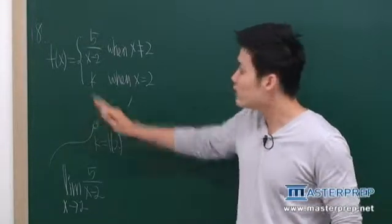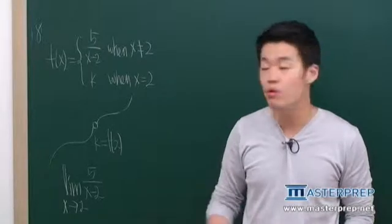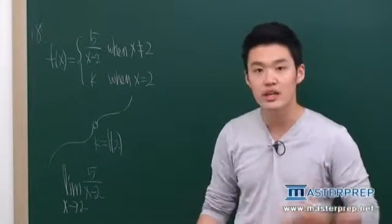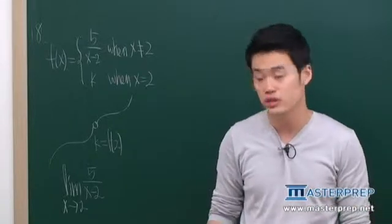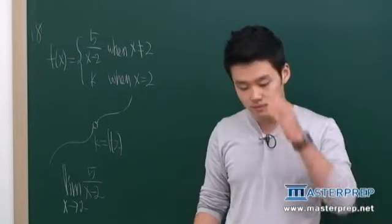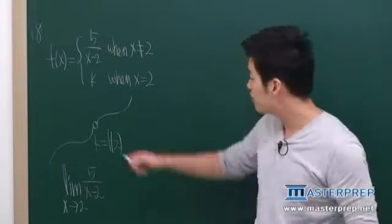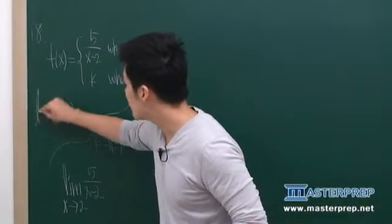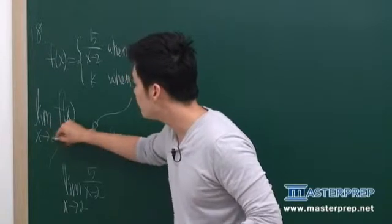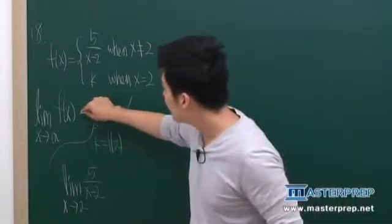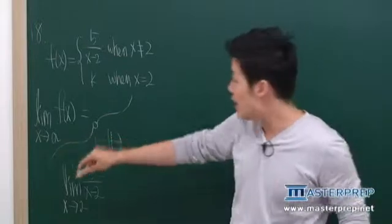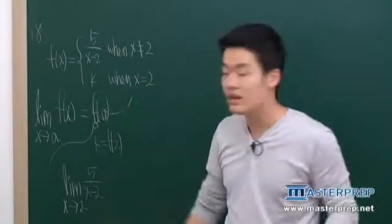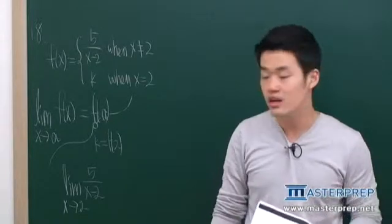So whatever k value that we have for that particular function, it doesn't make sense and we can't have a continuous function. What is the definition of continuous function? The definition is that if we're taking limit of f of x as x approaches a, that must be f of a. That is the definition of continuity.